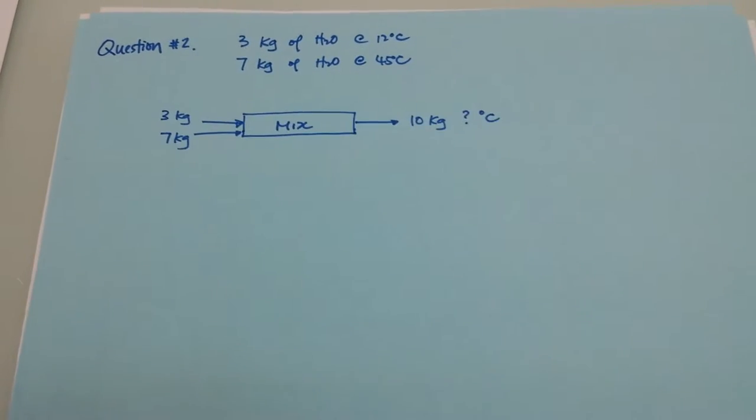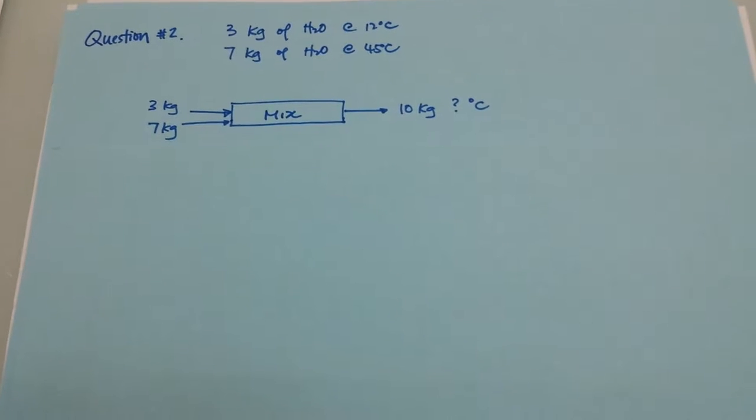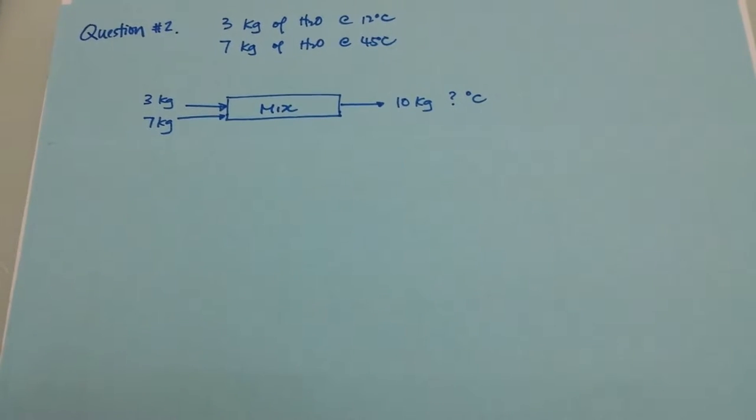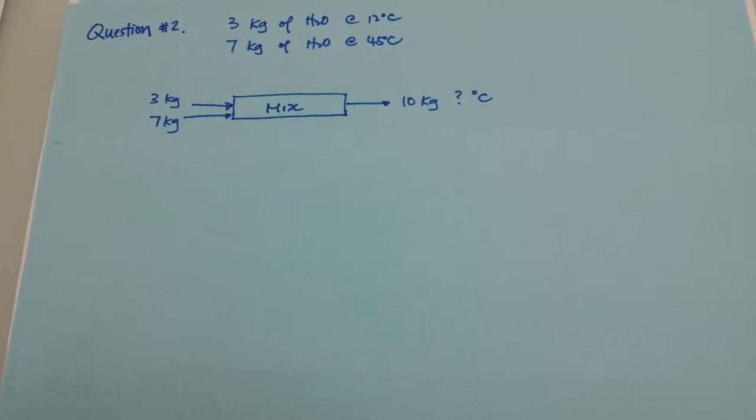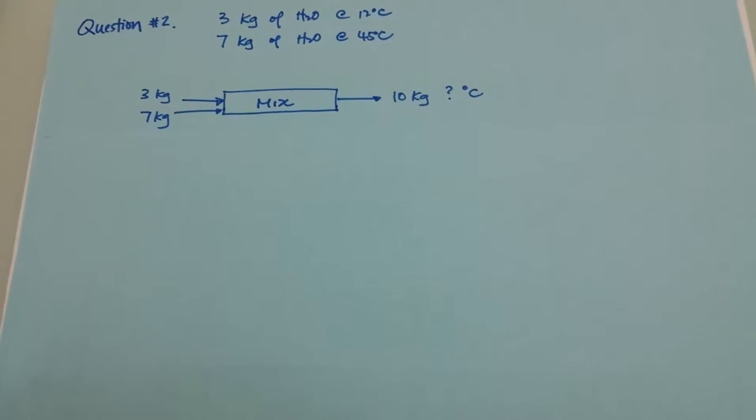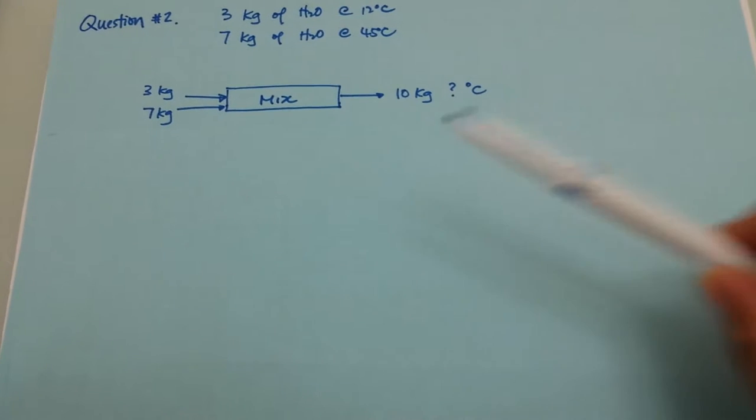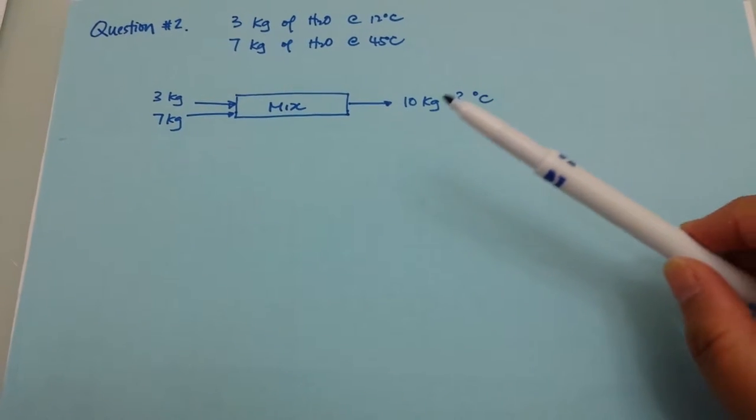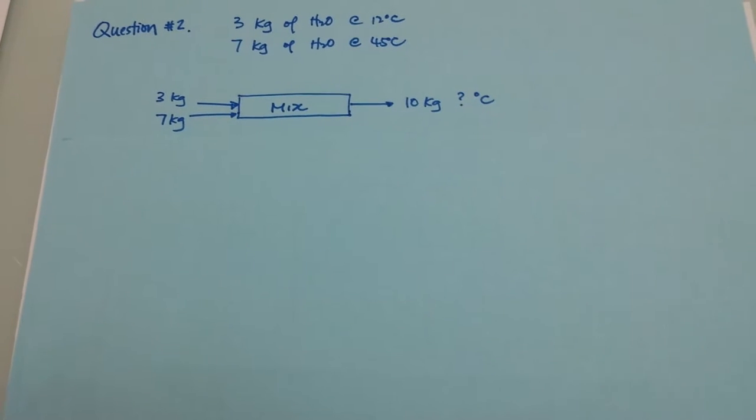As you will see in this systematic diagram, this is the input of 3 kg of water with 7 kg of water each at different temperature, mixing them together creating a total of 10 kg of water. Our job is to find out what is the final temperature.